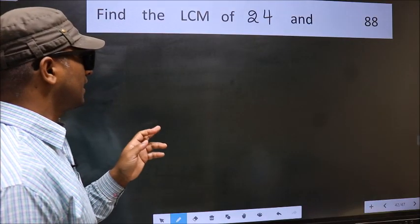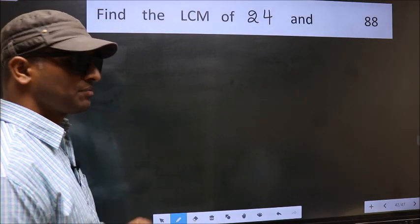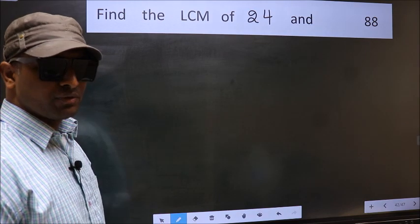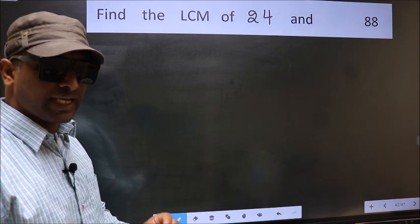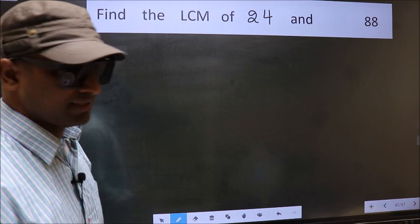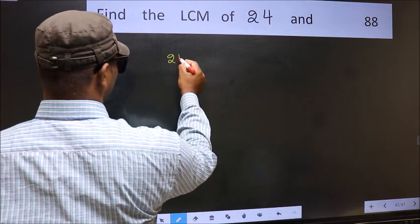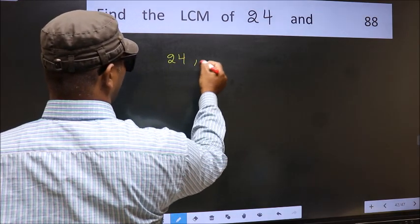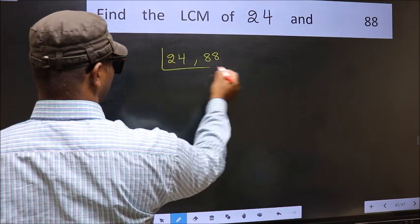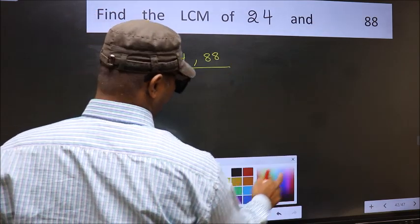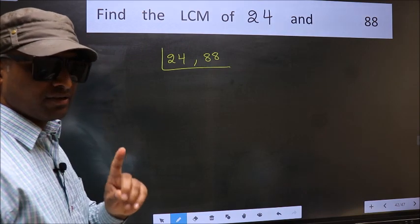Find the LCM of 24 and 88. To find the LCM, first we should frame it in this way: 24, 88. This is your step 1.